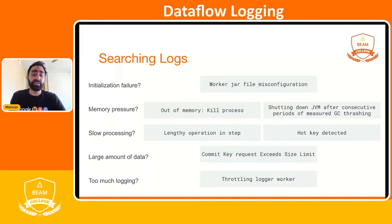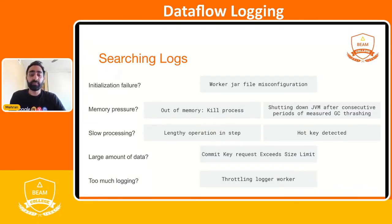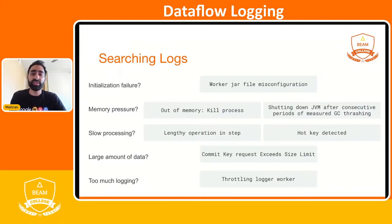You might also see a problem from slow processing — a lengthy operation in a particular step, or a detected hotkey. These are searchable within the logging UI. If you have a specific record that is too large for Dataflow to process, you might see a commit key request that exceeds the size limit, in which case you may want to shard that data. And if you have too much logging, you might see a throttling logger worker message. The limit is about 15,000 logs per 30 seconds.